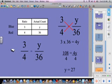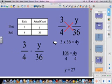We're going to multiply 3 times 36 and 4 times y. Right here we get 108 over 4 equals 4y, and we have to get the variable by itself. So we divide both sides by 4, and y equals 27.